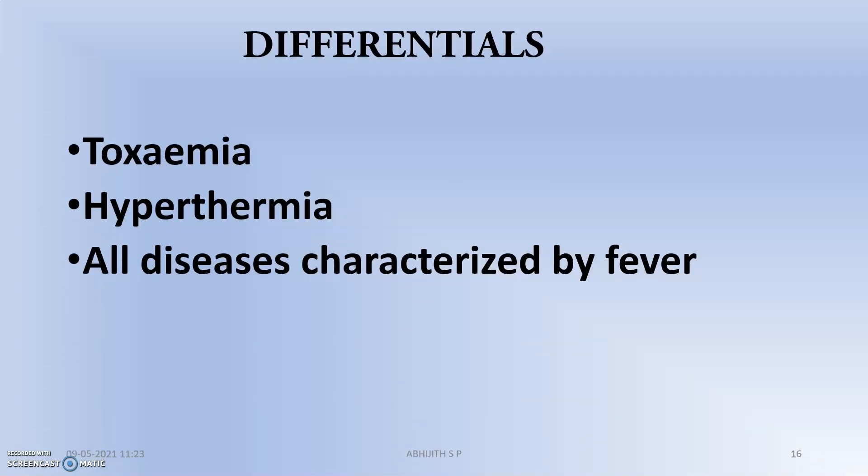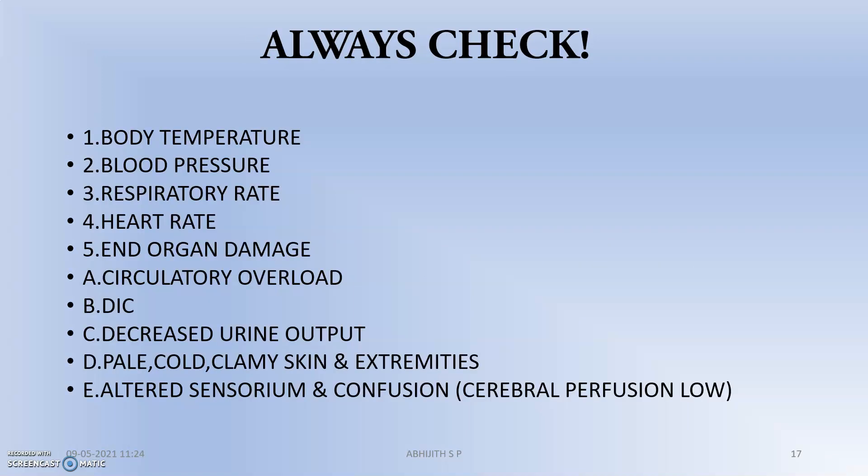The differentials include toxemia, hyperthermia, and all diseases characterized by fever. Almost all viral diseases will have a septicemic condition. Always check body temperature, blood pressure, respiratory rate, heart rate, and end organ damage. In case of end organ damage, check for circulatory overload, whether DIC is forming, decreased urine output, pale cold and clammy extremities, and altered sensorium and confusion — which indicates low cerebral perfusion and that the brain is not working properly, meaning the condition is progressing to a very bad stage. Check these five parameters regularly whenever the animal is in septic shock.